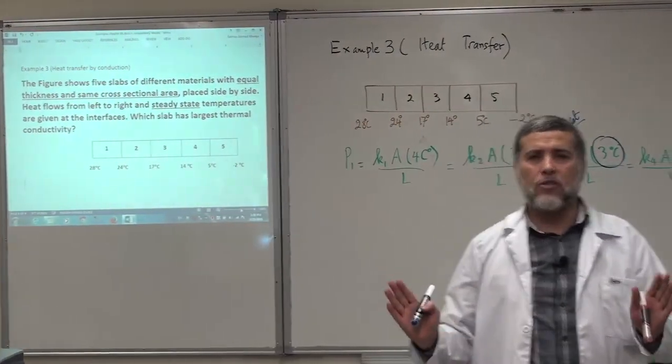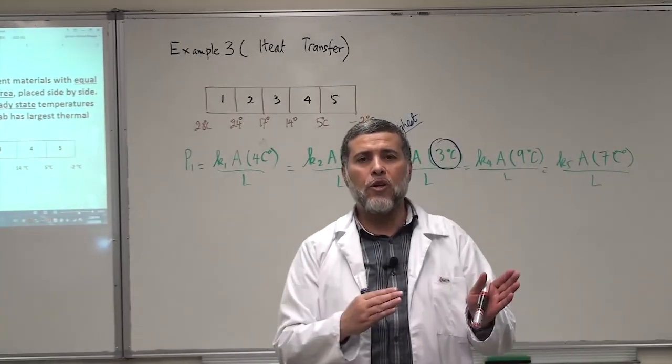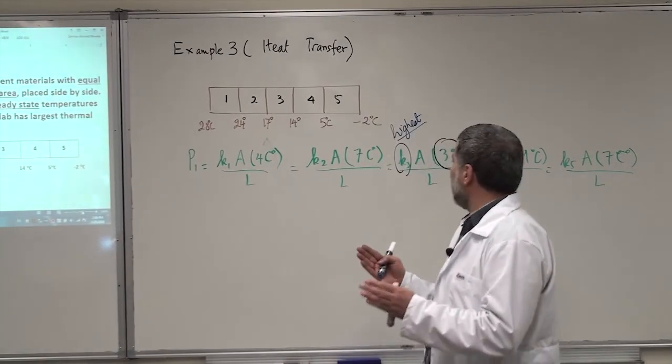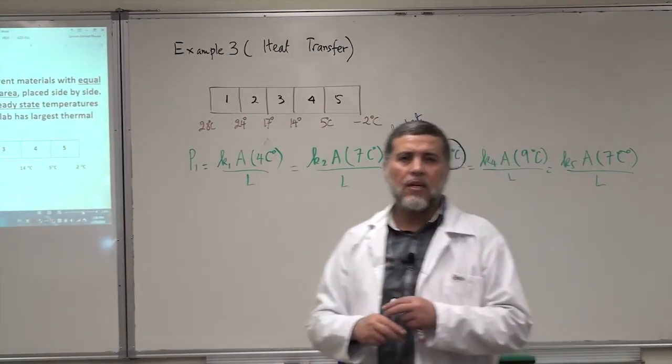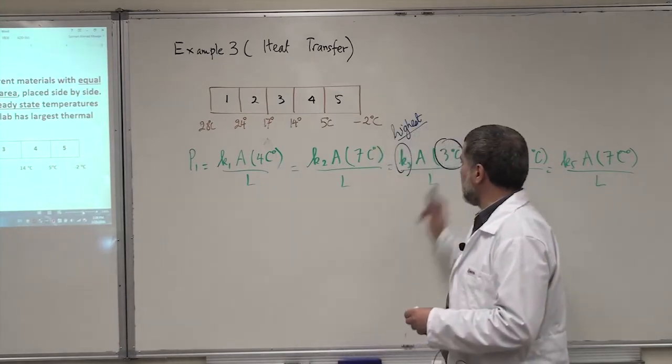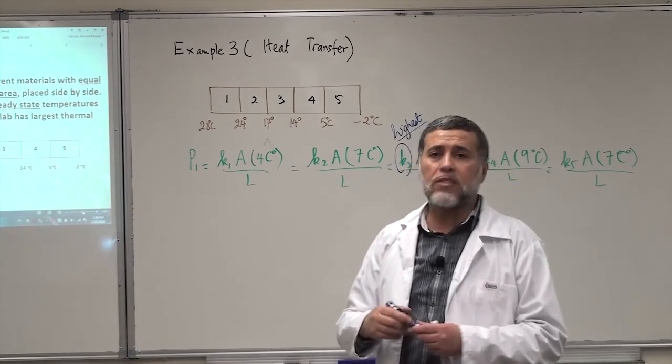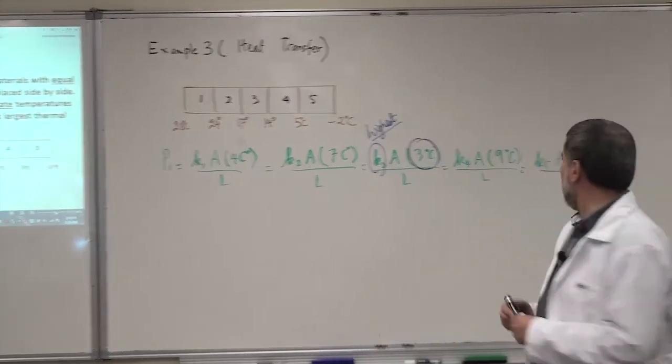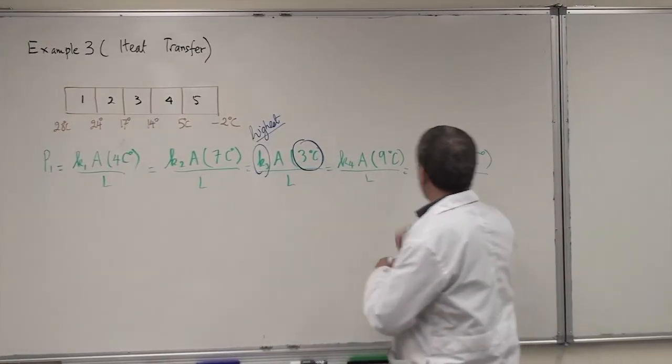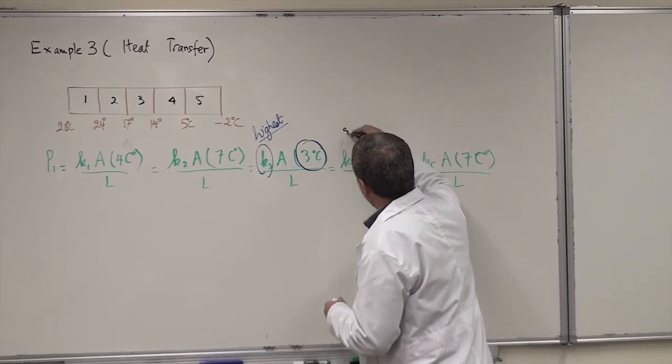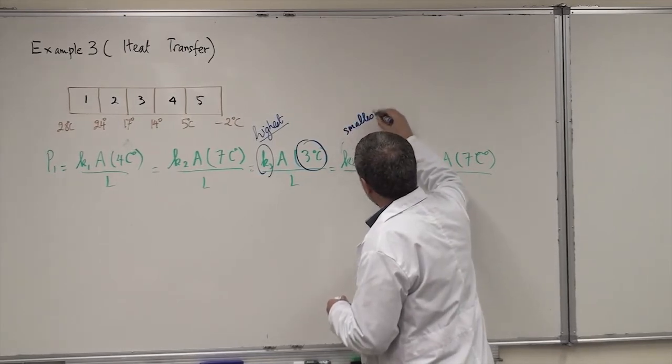That's the end of the question, but now, if we ask the opposite, we want the smallest K, the smallest K. That's the highest K because delta T is small, the smallest delta T. Now, if you want the opposite, you want the smallest K, you go to highest delta T. The highest delta T is here, so this will be the smallest K. Here, highest K.